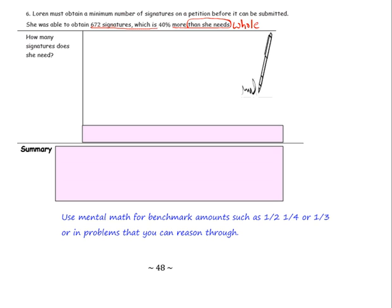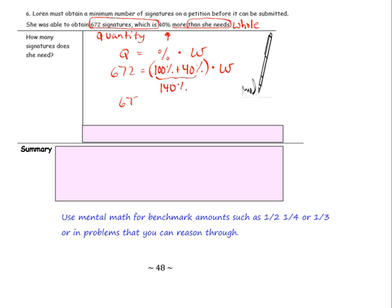The 672 which is, okay, that is the quantity. And remember the quantity can be more than the whole. And then 40% more than. So 100% would be the amount she needed and she got 40% which is more than the 100%. So we're going to go ahead and use our percent equation. Quantity equals percent times whole. The quantity is the 672 signatures. The 100% plus the 40% is the amount of signatures she obtained. And the whole is the amount she needed to obtain. So we add this together and we get 140%. Remember in the equation to write it as a decimal. The decimal is 1.4 times w for whole. So here we have an equation that we can solve to find the answer to our problem.